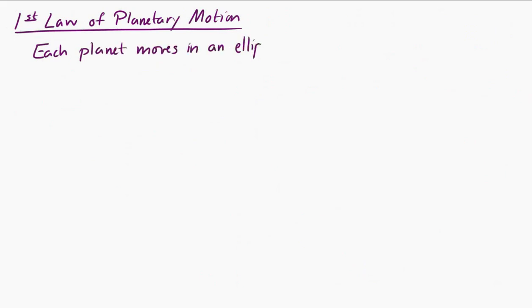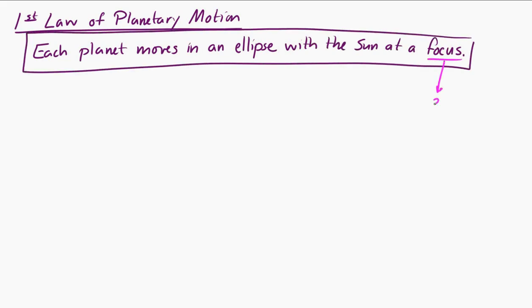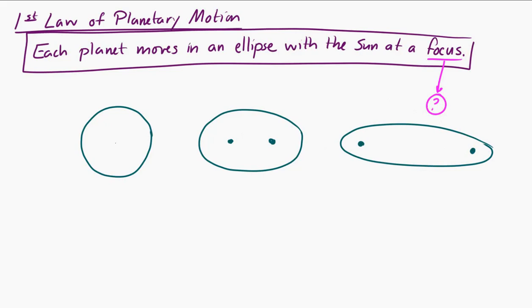So let's look at the first law. Kepler's first law of planetary motion is that each planet moves in an ellipse with the sun at a focus. So what the heck is a focus? To explain, I'm going to draw three ellipses here.